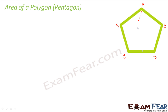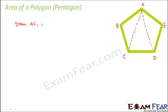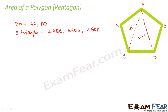So let's say we draw the diagonals AC and AD for pentagon ABCDE. The moment we draw these diagonals, we end up with three triangles: triangle ABC, triangle ACD, and triangle ADE — triangle number one, two, and three. So we obtained three triangles, and now we need to find out the area of these three triangles and sum them up to get the area of the pentagon.